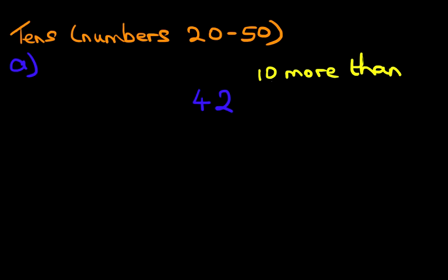Let's have a look at number 10. This is a unit and the 1 is a 10. Now if it's a 0 for the unit, the unit should not change. So this 2 over here, which is also a unit, should not change. It is the 4, which is a 10, which is going to change because of this.